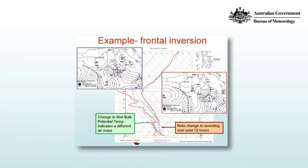Here's a situation where a front passes through Melbourne. The MSLP chart in the top left shows northwesterly winds ahead of the front and the chart on the right shows southerly to southeasterly winds behind the front over Melbourne. The trace shows marked cooling below 700 hPa in the past 12 hours, shown by comparing the blue trace to the red trace.